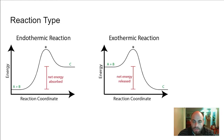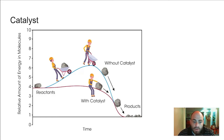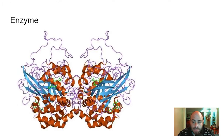If you could lower the activation energy, you could speed up the reaction. The x-axis has to do with the reaction coordinates based on the progress of the reaction, so if you could shorten that you could speed up the reaction. That's what a catalyst does — a catalyst is something that speeds up a chemical reaction by lowering its activation energy. The blue line represents a reaction with higher activation energy, while the purpley line with a catalyst takes less activation energy.